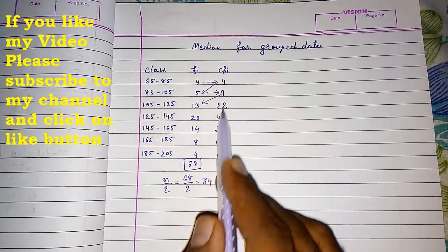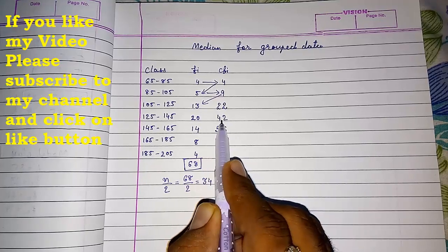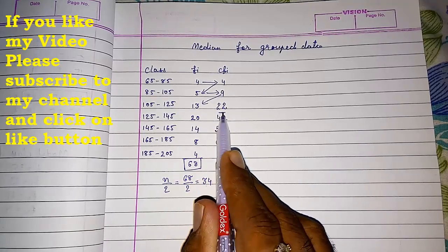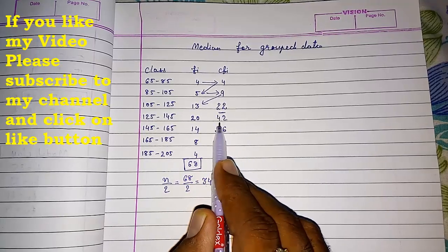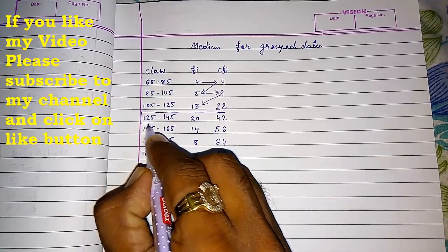We have to check where 34 will come. It will come between 22 and 42. 34 will come here. We have to see the next frequency, and that will be our median class.